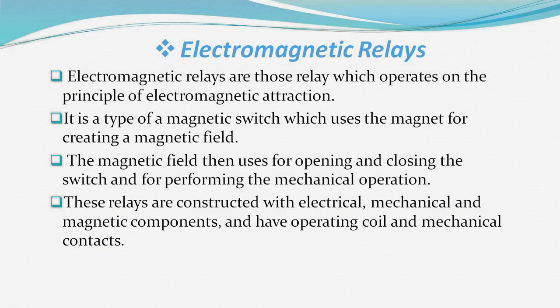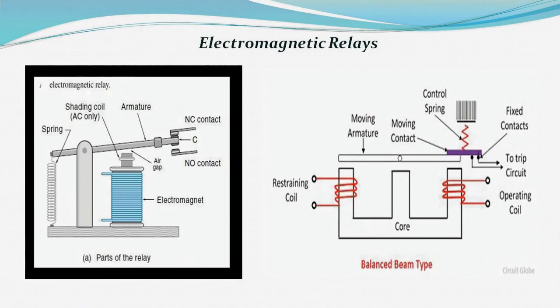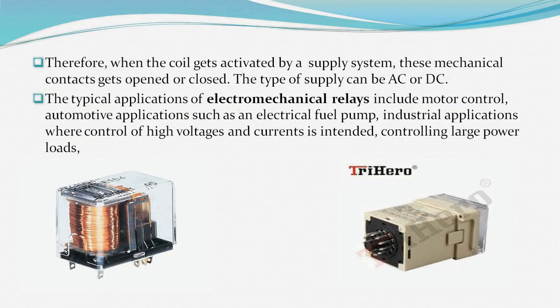Electromagnetic relays are constructed with electrical, mechanical, and magnetic components, and have an operating coil and mechanical contacts. When the coil gets activated by a supply system, these mechanical contacts get opened or closed.